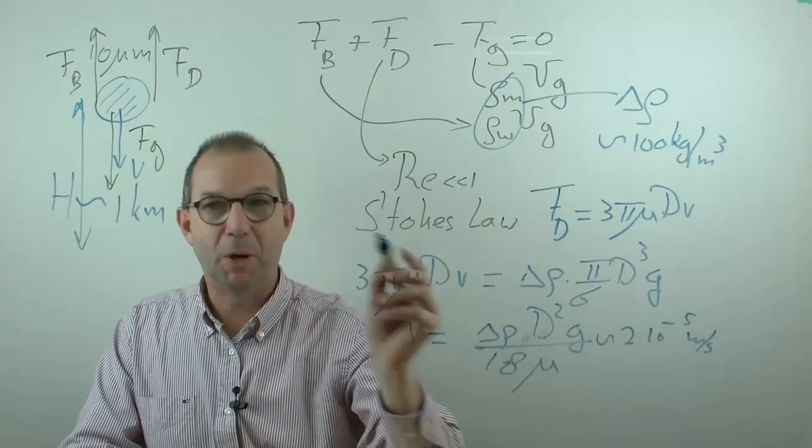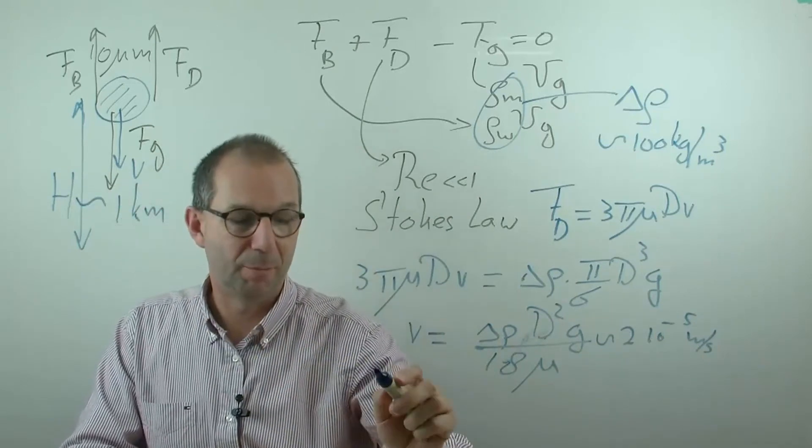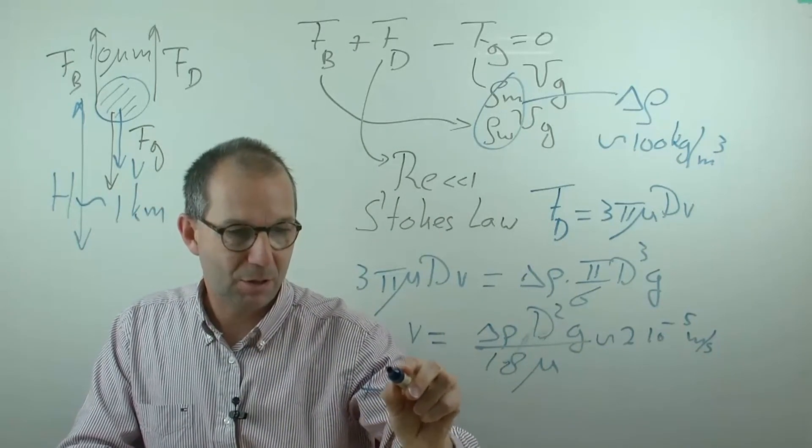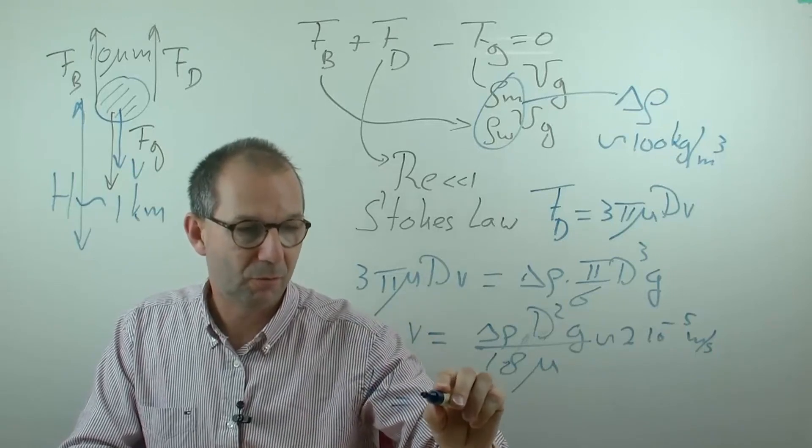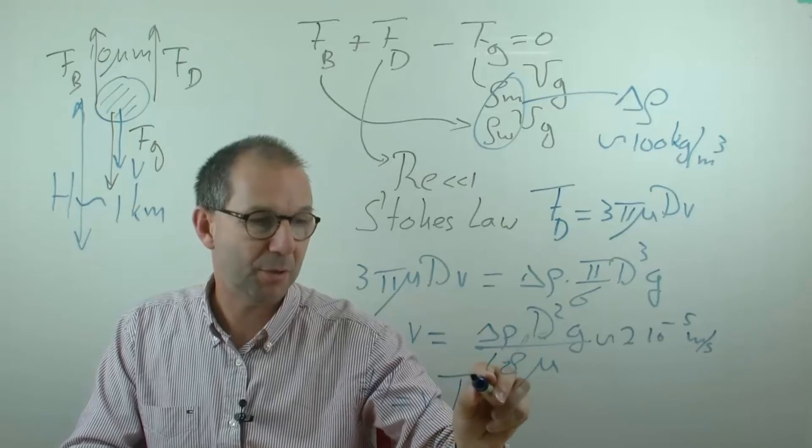That is one part, we got the velocity. Now what is the sinking time? It goes down a depth h of 1 kilometer with the velocity v, that takes capital T as time.